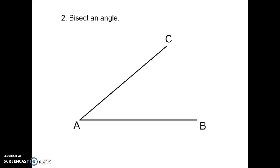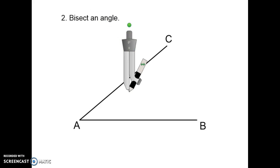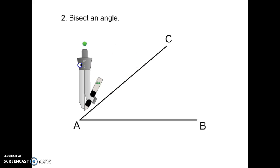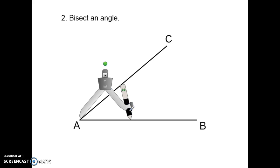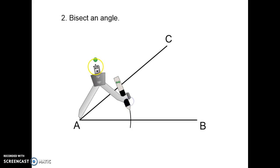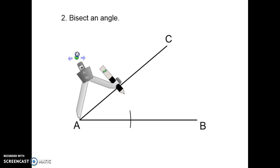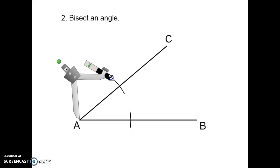Next we're going to look at how to bisect an angle. Take your compass and place it on the point of the angle. Open it up — how far doesn't particularly matter — and draw an arc that goes through both lines of the angle.